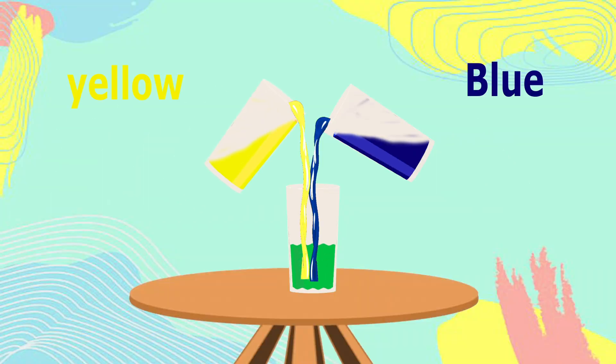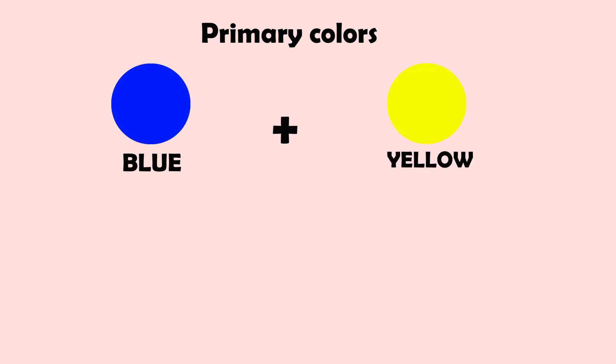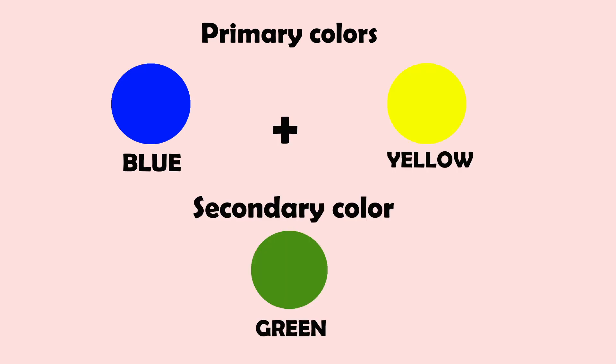Now, mix blue and yellow juice together. Wow, it becomes green juice! When we mix two primary colors, blue and yellow, it becomes secondary color green.